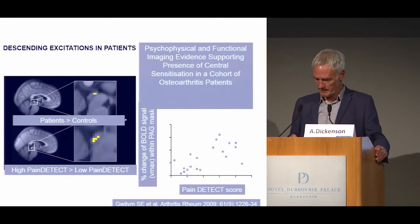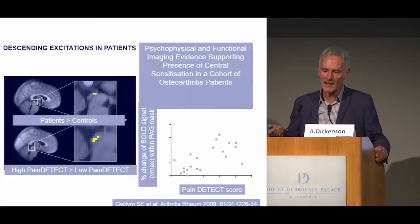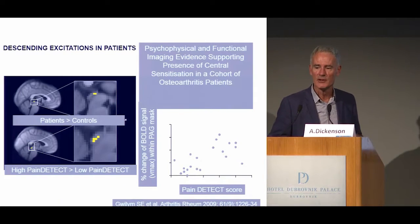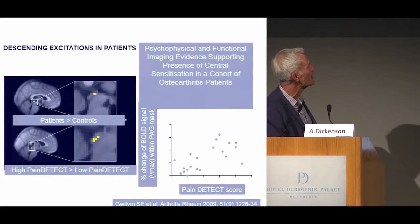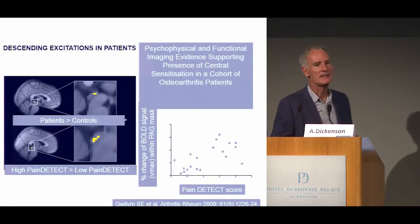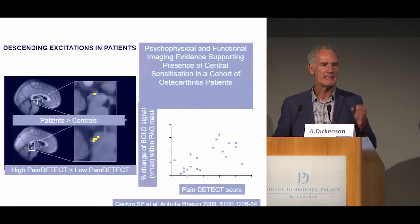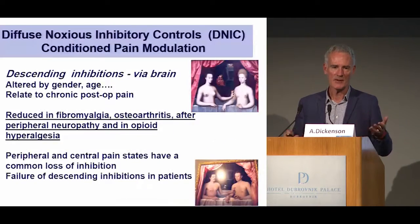Work by Irene Tracey's group looks at patients with osteoarthritis and the central gray, a key area driving the brainstem and descending pathways. There was more activation of this area in OA patients, and it related to their pain scores. So this has to be evidence for a descending excitation in patients with osteoarthritis.